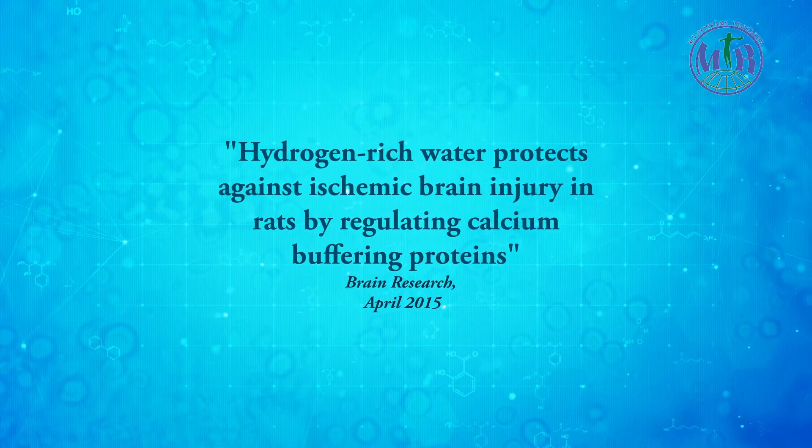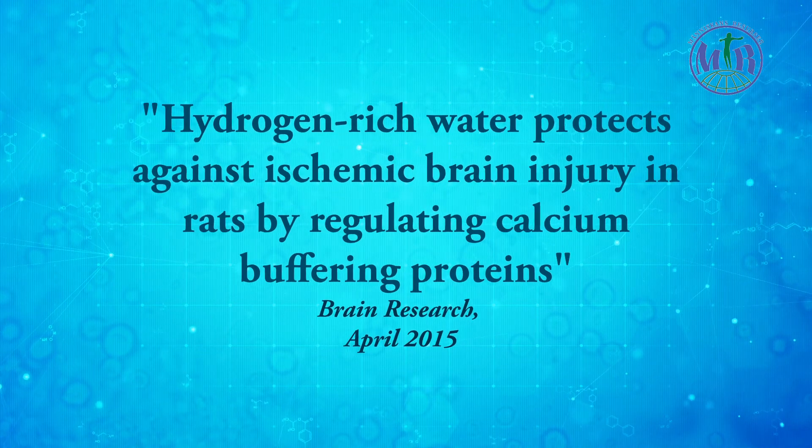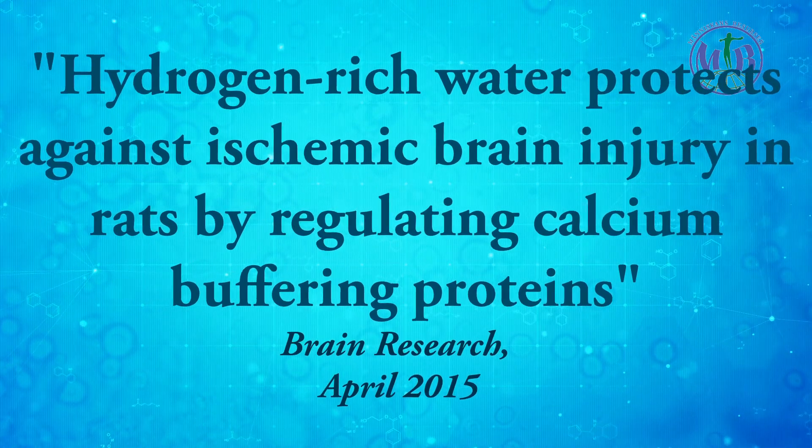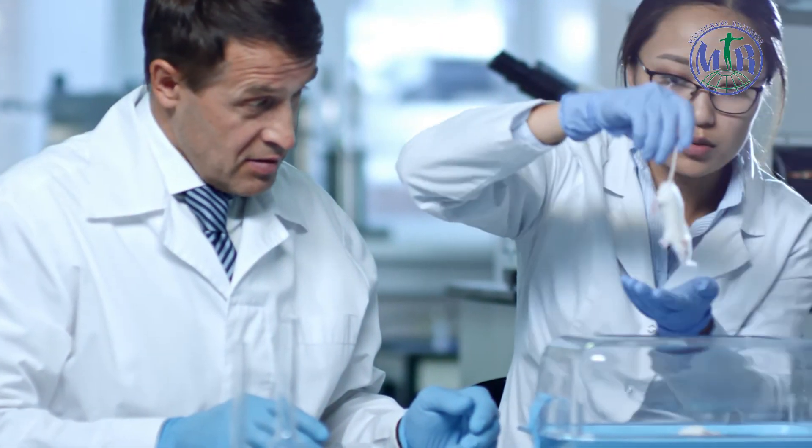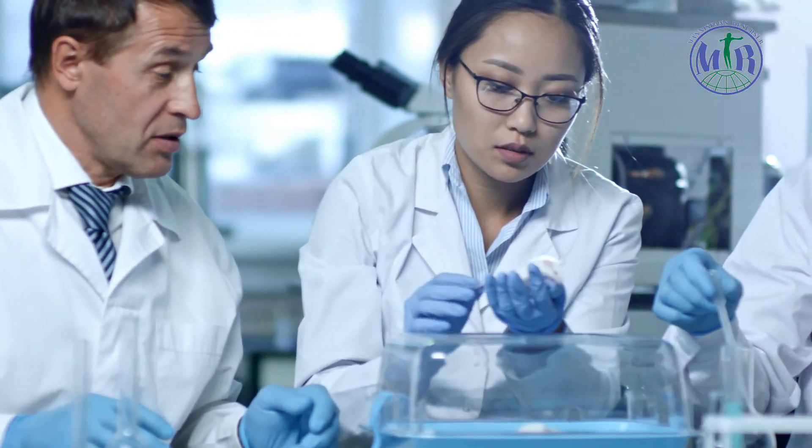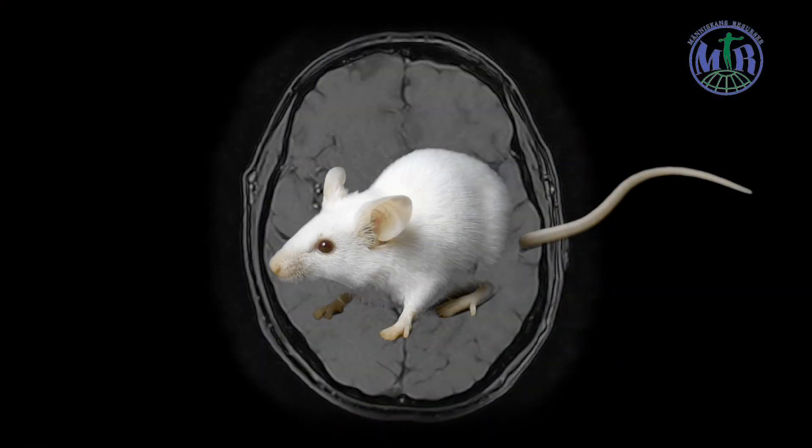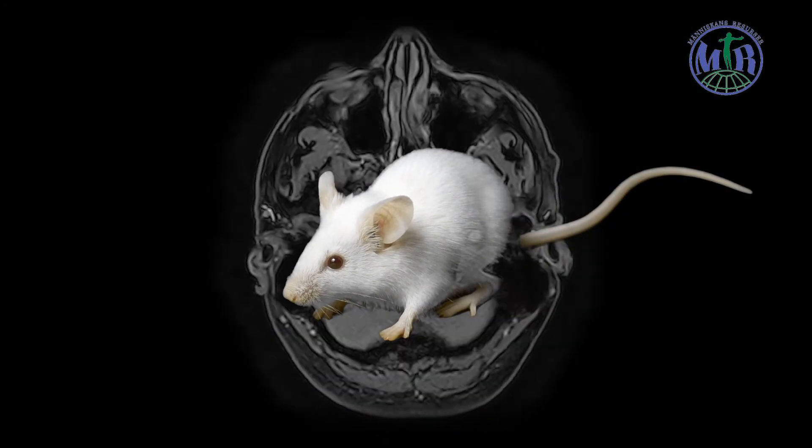For example, a study on how hydrogen-rich water protects against ischemic brain injury in rats by regulating calcium buffering proteins. Rats consuming hydrogen water for 14 days had a reduced risk of ischemic brain damage compared to rats who consumed regular water.